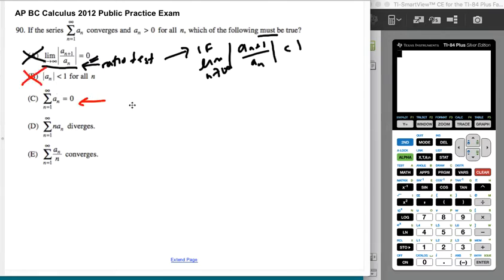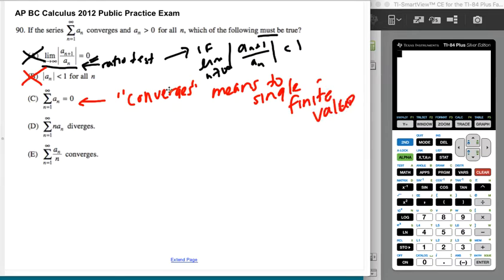We don't know what it converges to. So like, converges means to a finite sum, to a single finite value. We don't know the value, we just know it converges to a single finite value. We don't know the value, so it definitely doesn't have to be zero.